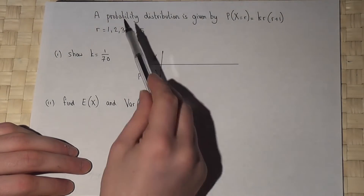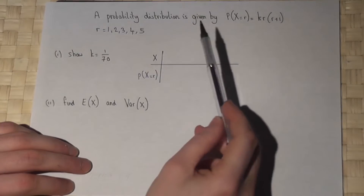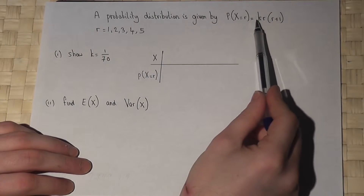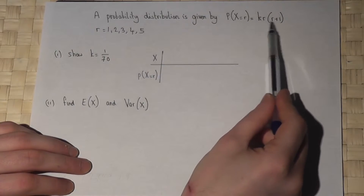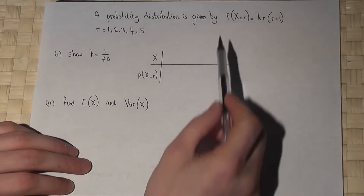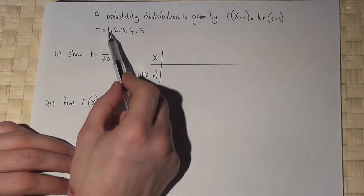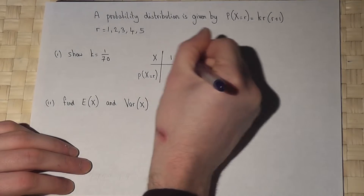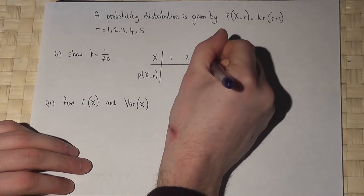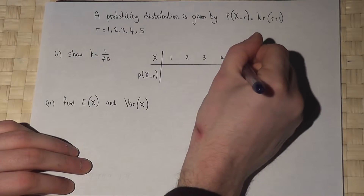In this question, we're given a probability distribution, and we're given that the chance that x equals r is k times r times (r plus 1). x can take any value from 1 to 5: 1, 2, 3, 4, 5.